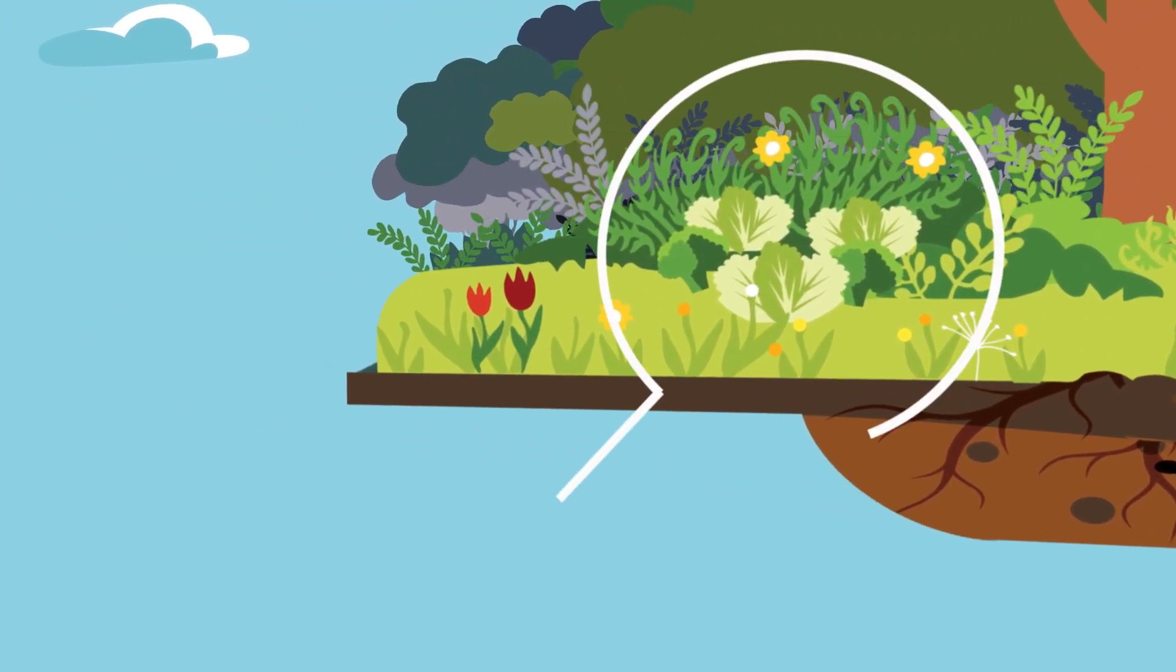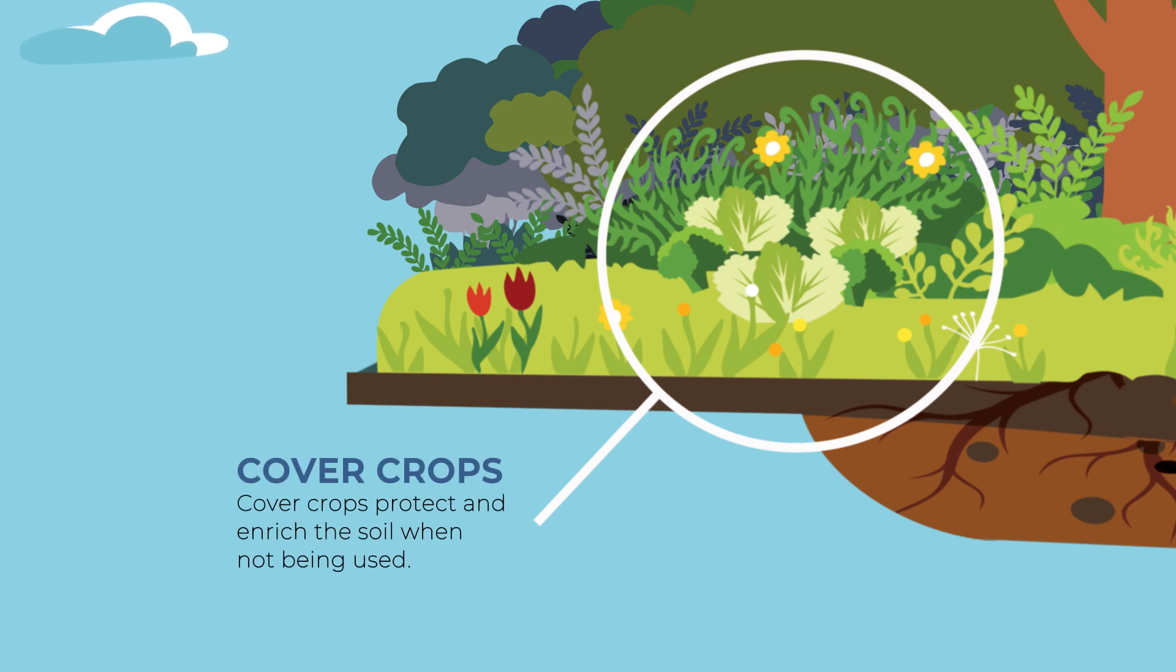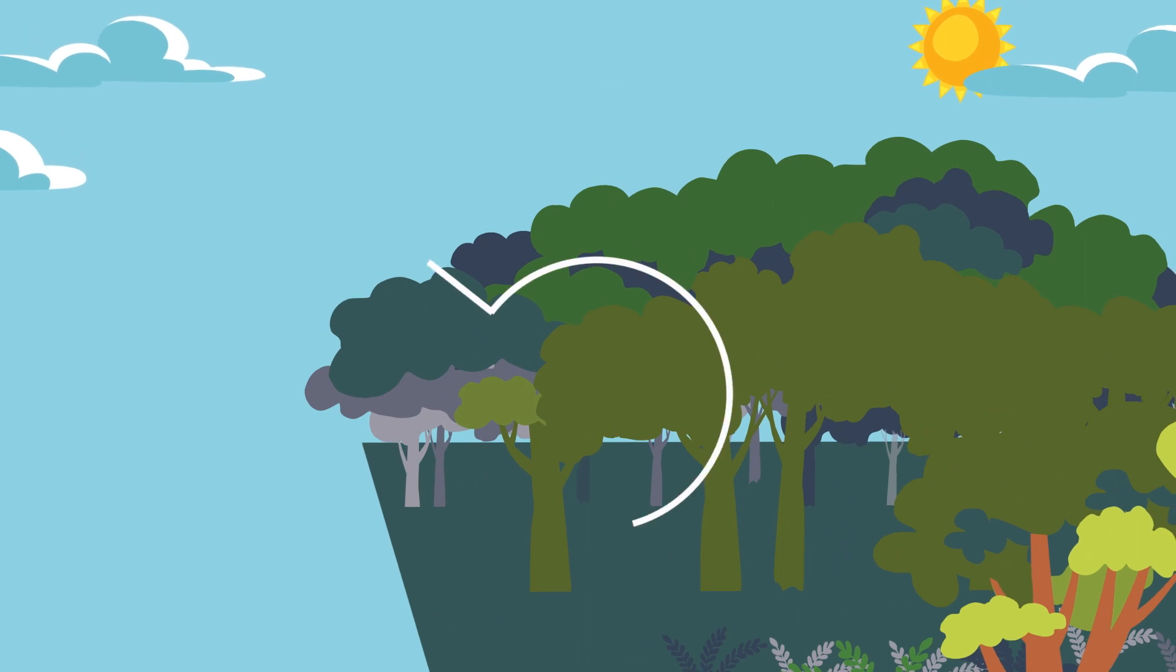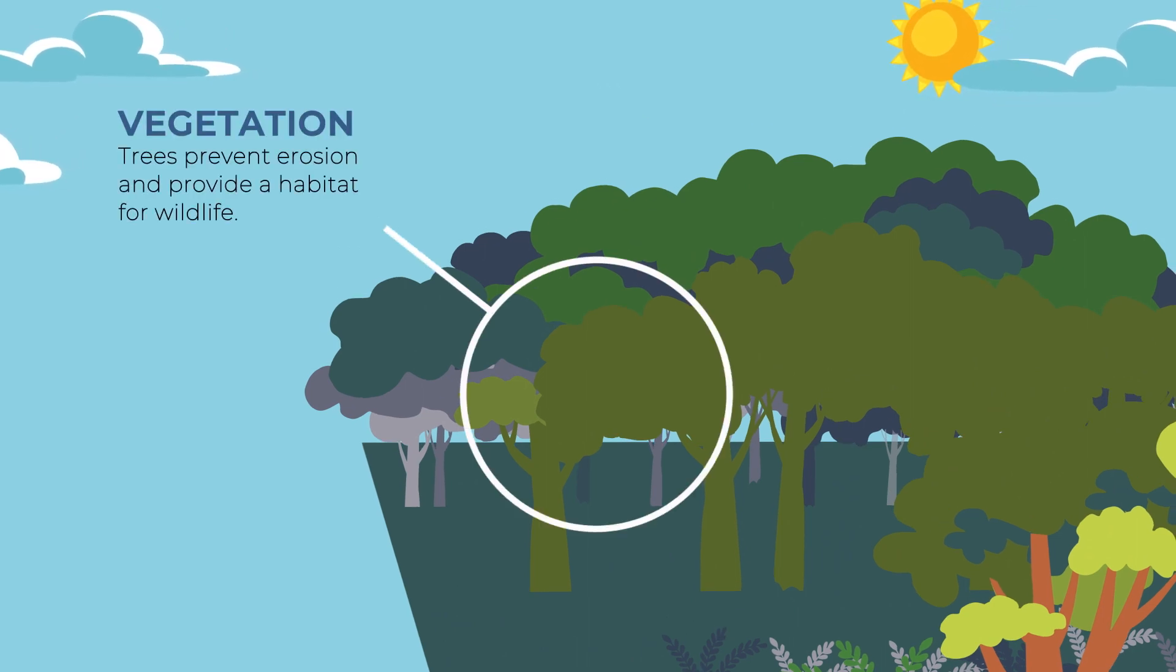Cover crops ensure the ground is never fallow and remains fertile year-round, while nearby trees and plants prevent erosion and provide a habitat for wildlife.